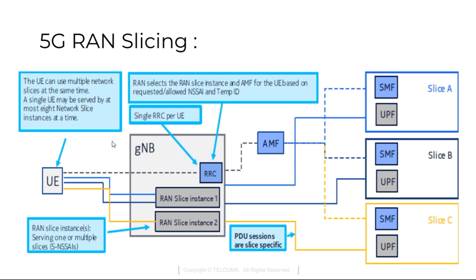A single UE may be served by up to eight network slice instances at a time. RAN slice instances serve one or more multiple slices. A PDU session is associated with one single Network Slice Selection Assistance Information, called SNSSAI, and one DNN — Data Network Name.